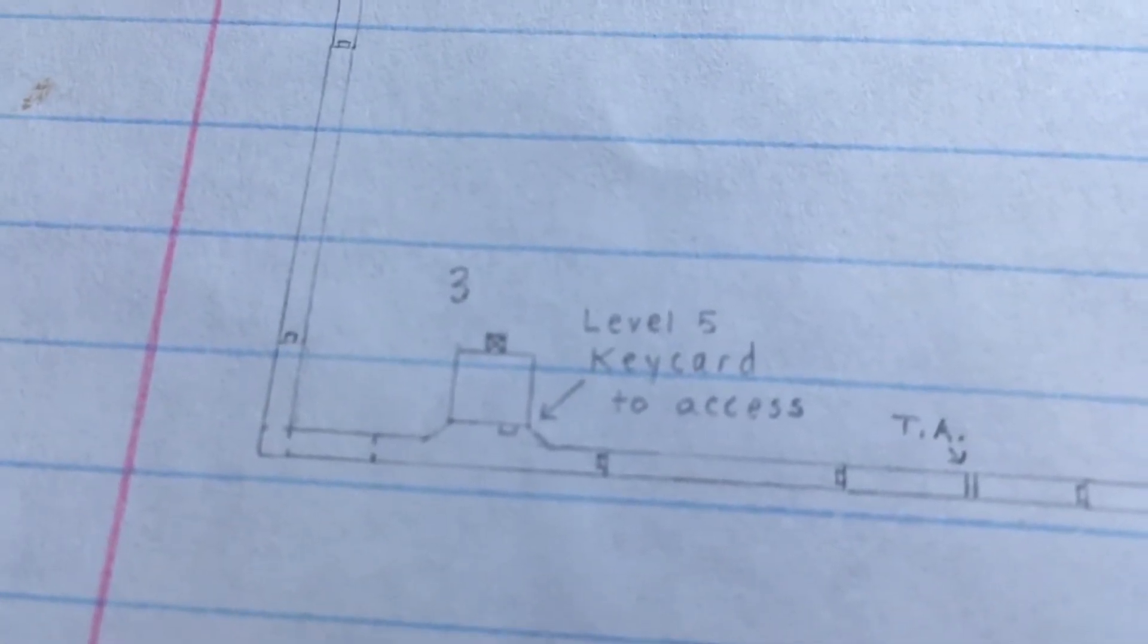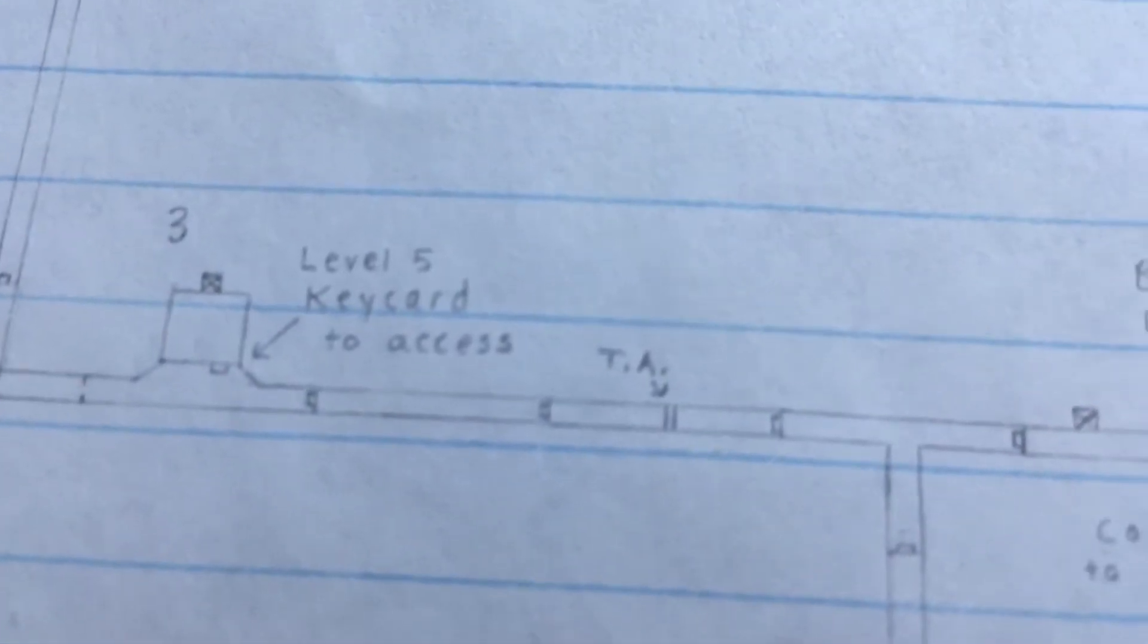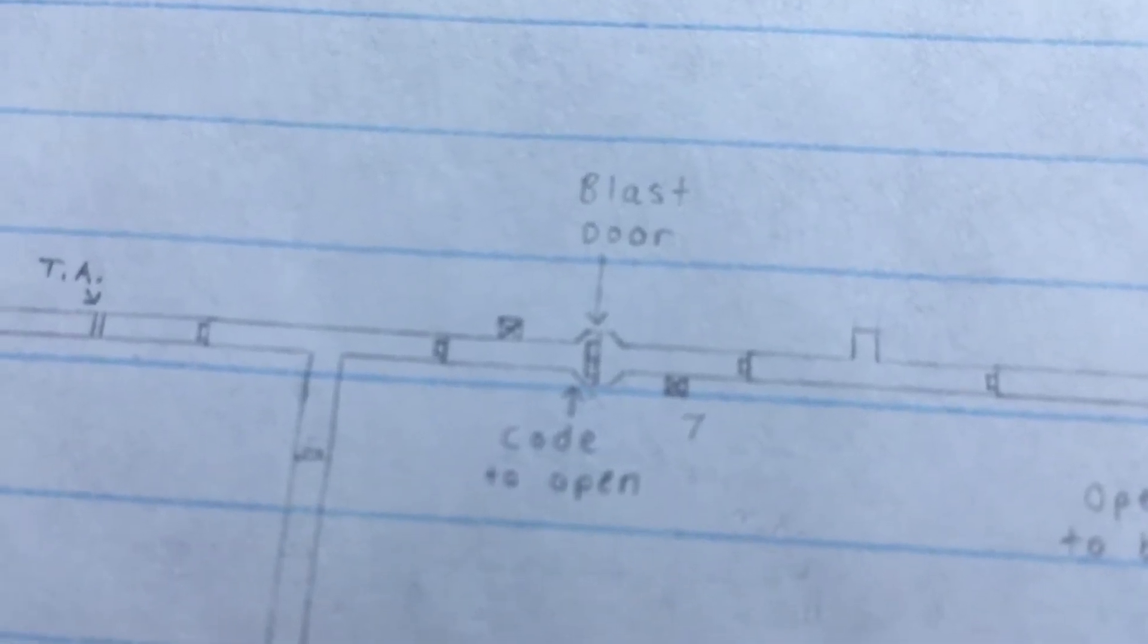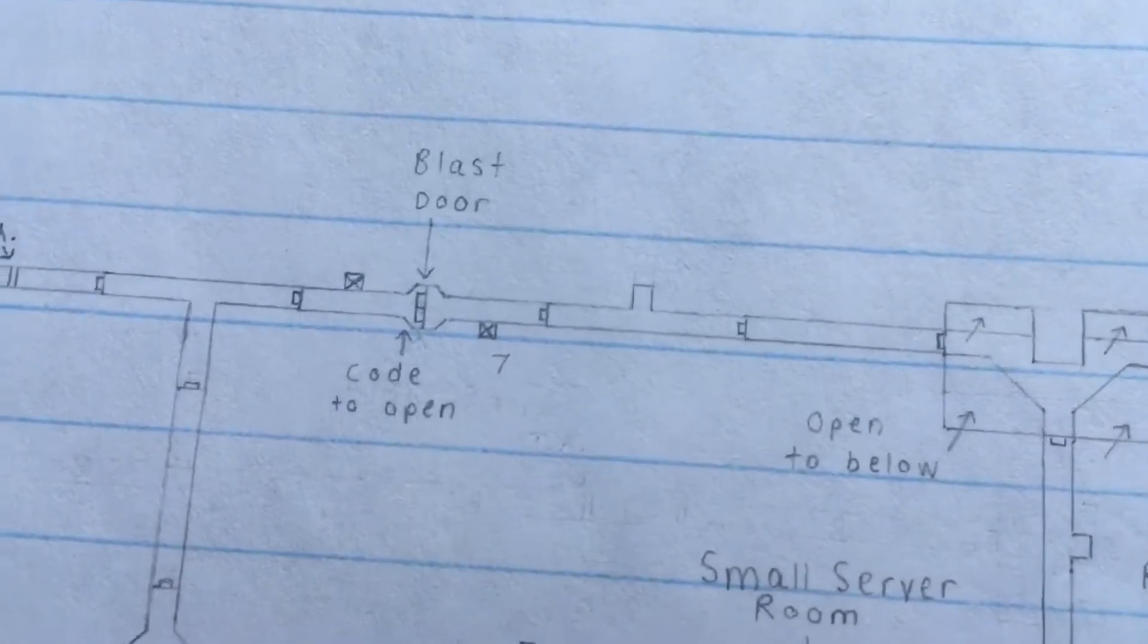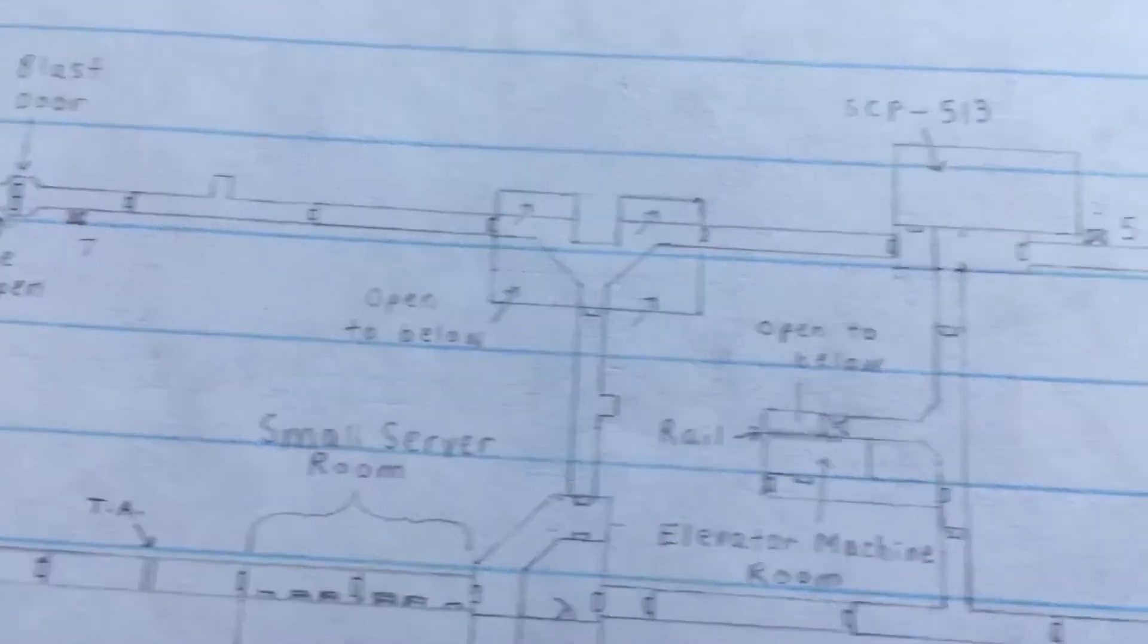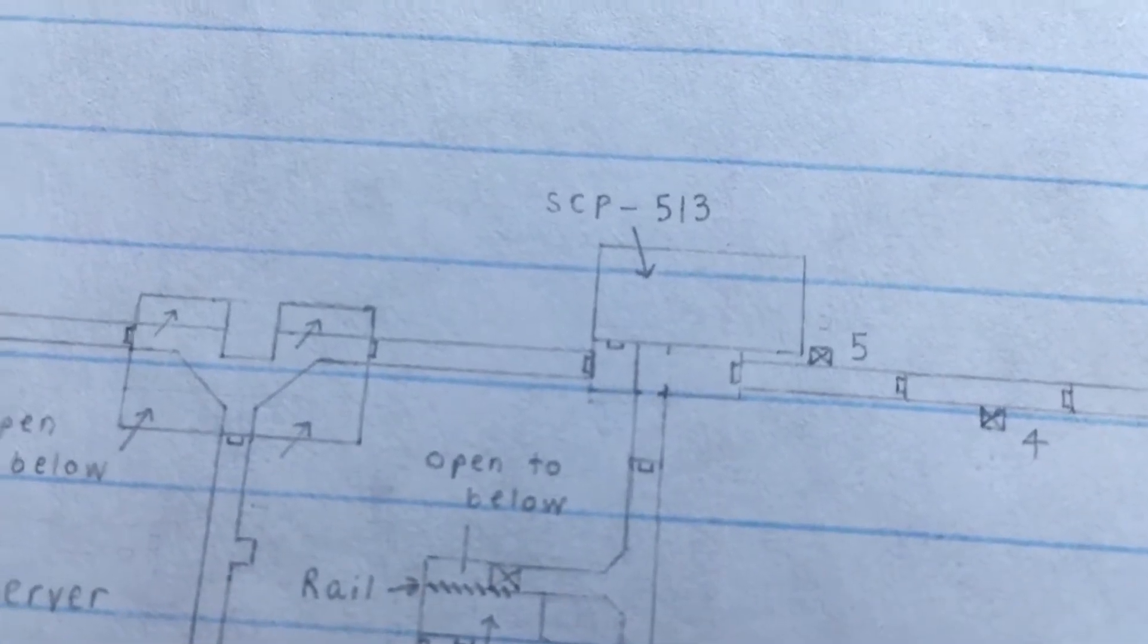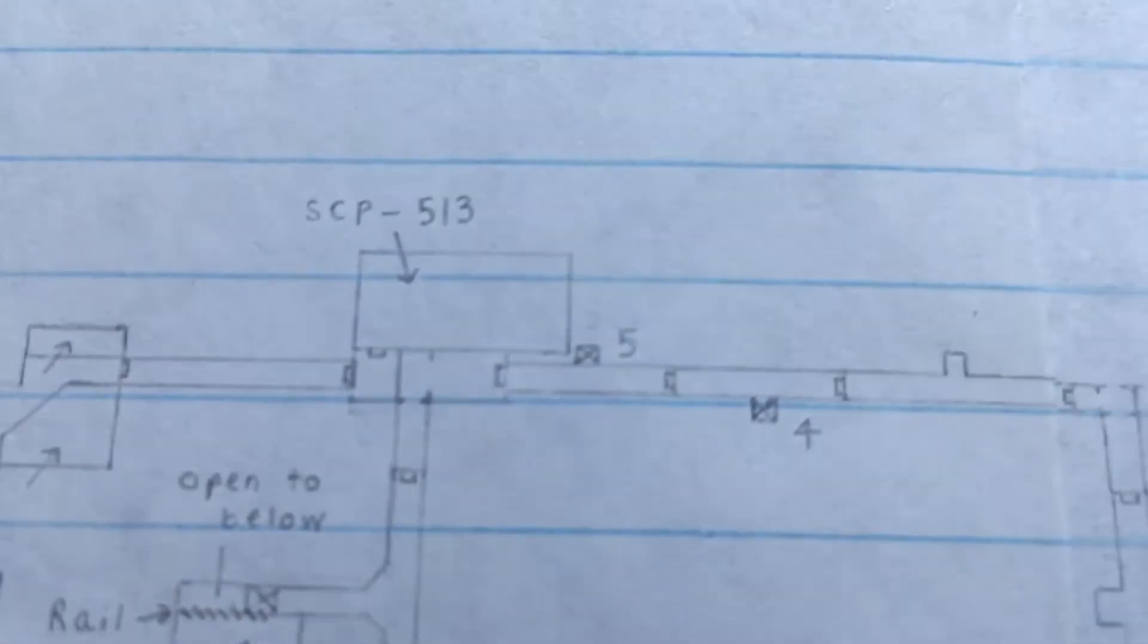Which only leaves us to go down here. There's the omega warhead silo - well, the entrance to it. You need a level five for that. Tesla gates, intersections, hallways, blast door. These elevators I think lead down to either maintenance tunnels or 049's chamber. Here's 513's chamber.